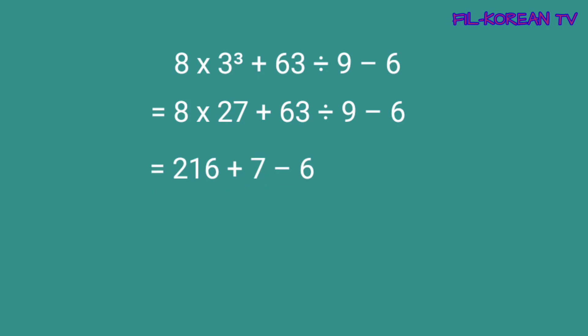Ngayon, dahil dalawang operations na lang yung natitira, addition and subtraction, ang gagawin natin ay left to right. Magpa-plus muna tayo bago mag-minus. Okay. 216 plus 7 equals 223. And last, 223 minus 6 equals 217. So, the answer is 217.